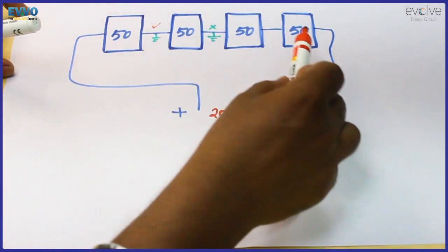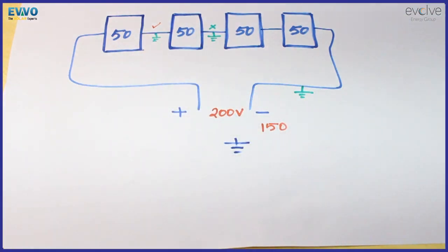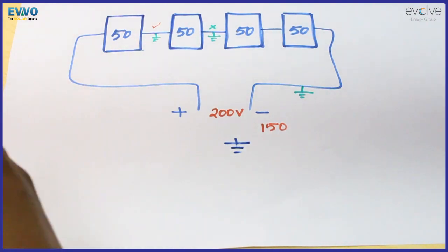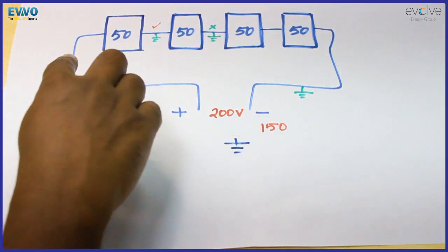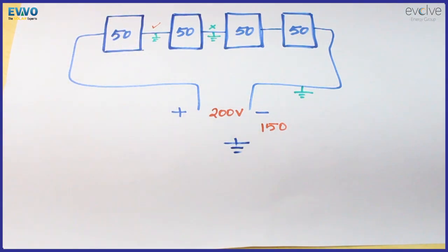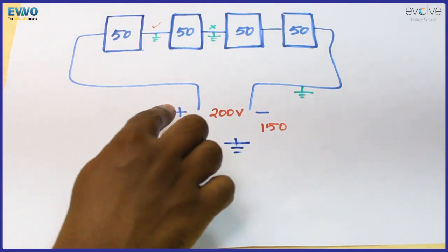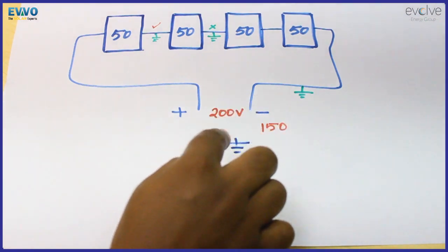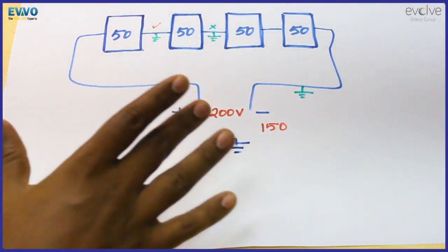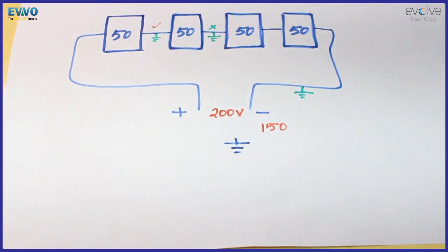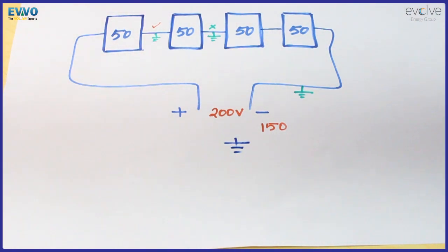This is how you identify where the leakage is happening in on-grid solar systems. In reality it's not just four solar panels — you may have 20 or more. By knowing the voltage of one single solar panel and measuring the voltage between positive to ground and negative to ground, you can easily identify where the fault is happening.